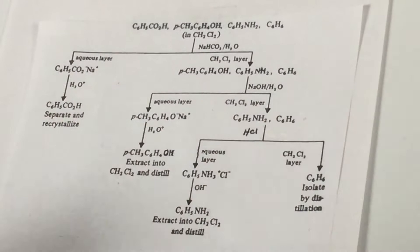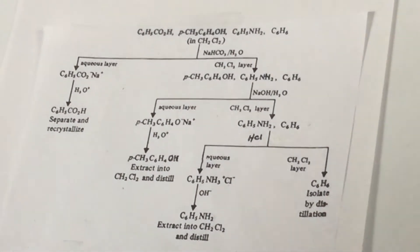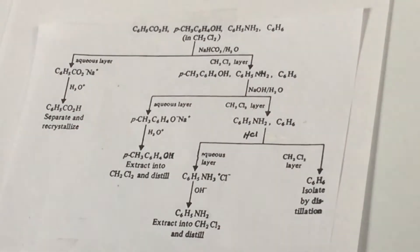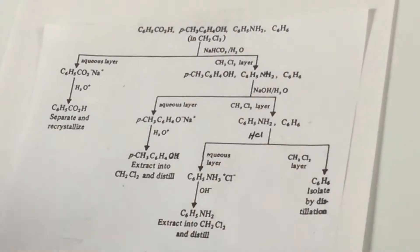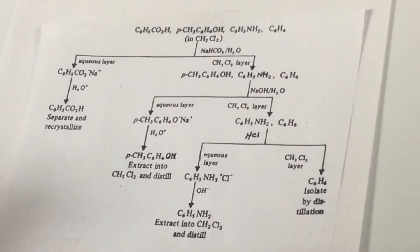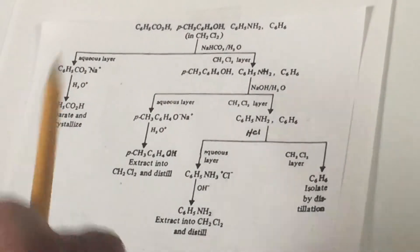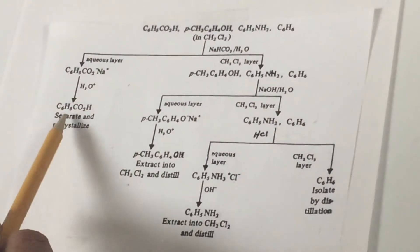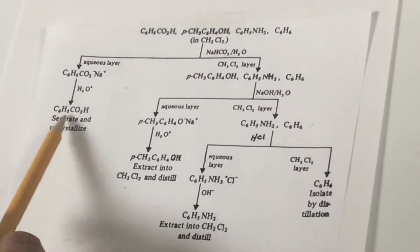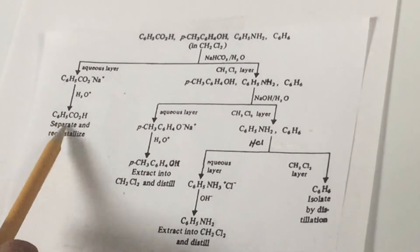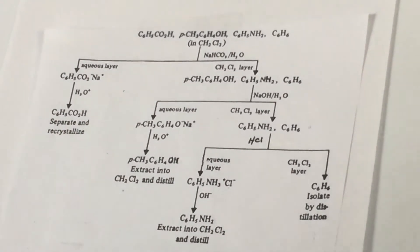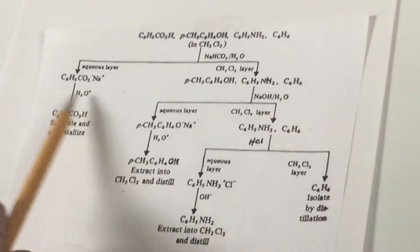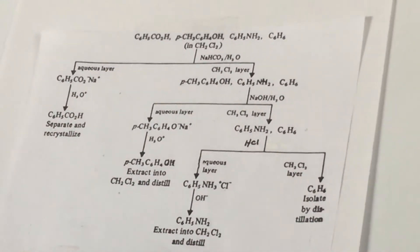Then I would separate the layers. The more dense compound would be on the bottom layer, the less dense at the top. After you separate the layers, you go to the aqueous layer, you acidify it, and then you would regenerate back your benzoic acid, then separate and recrystallize. You've now isolated the benzoic acid from the mixture.